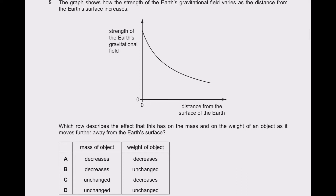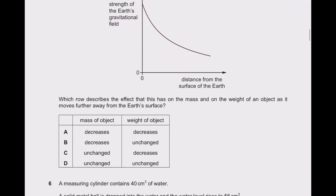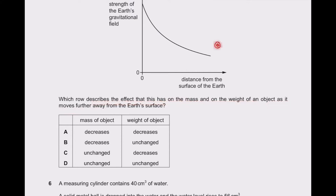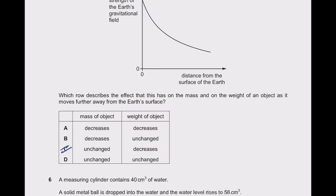Question 5: the graph shows how the strength of Earth's gravitational field varies as distance from the surface increases. As we go higher, the gravitational field strength decreases. The question asks about the effect on mass and weight as an object moves further from Earth's surface. Mass is a constant quantity — it doesn't depend on g — so mass remains unchanged. Weight equals mg, and since g is decreasing, the weight of the object will decrease. Option C is the right answer.